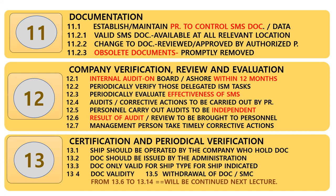Chapter 12: Company Verification, Review and Evaluation. Section 12.2.1: Internal audit on board is to be carried out within 12 months. Section 12.2: Periodically verify those delegated ISM tasks. Section 12.3: Periodically evaluate the effectiveness of the SMS. Section 12.3 is also the purpose of the internal audit — why we carry out an internal audit is to evaluate the effectiveness of the shipboard safety management system. Section 12.5: Personnel carrying out the audit are to be independent — meaning an auditor from the engineering department cannot audit his own department. Section 12.6: Results of the audit are to be brought to the attention of personnel. Section 12.7: Management persons take timely corrective actions.